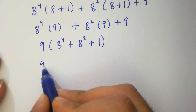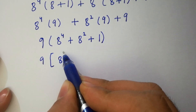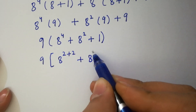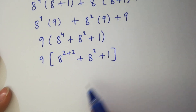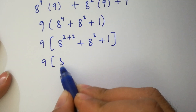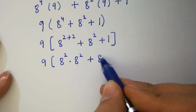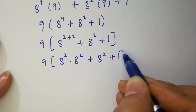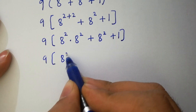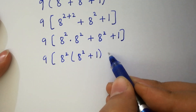Here, a to the power 4 is the same as a to the power 2 plus 2, since 2 plus 2 is 4. So 8 to the power 2 plus 2 will be 8 to the power 2 times 8 to the power 2, plus 8 squared plus 1. Here, 8 squared can be factored out: we have 8 squared times (8 squared plus 1), plus 1 as it is.